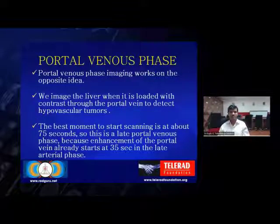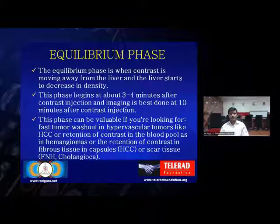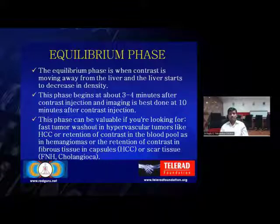In the portal phase, most of the liver gets loaded with contrast and tumors become hypovascular, so hypovascular tumors can be detected. The best moment to start scanning is around 75 seconds — the portal phase starts around 35 seconds but the optimal period is around 75 seconds. In the equilibrium phase, contrast is moving away from the liver and liver density starts to decrease; this starts around three to four minutes and can be imaged at around 10 minutes. This phase is done basically to look for post-tumor washout.